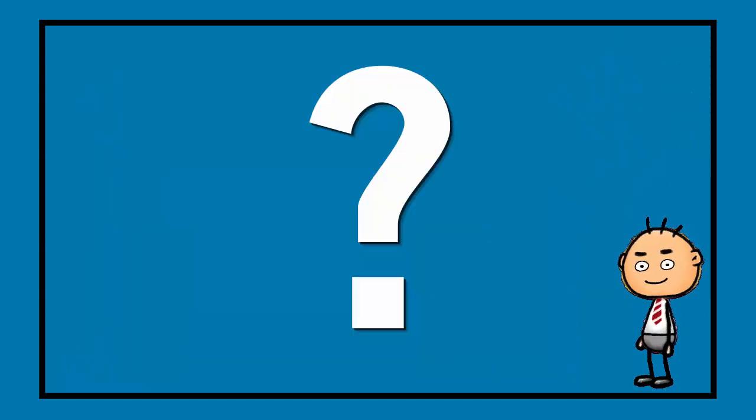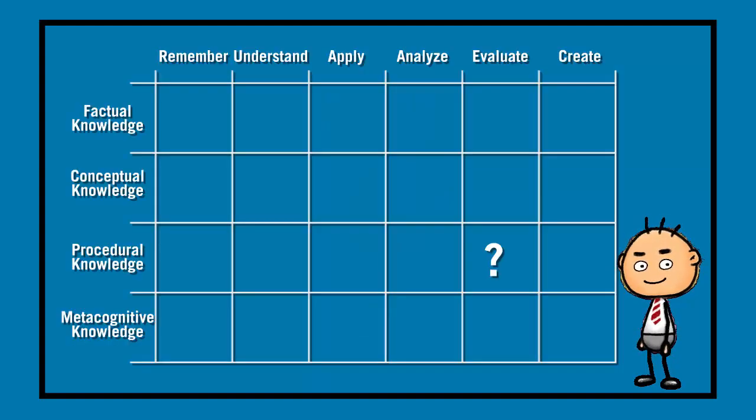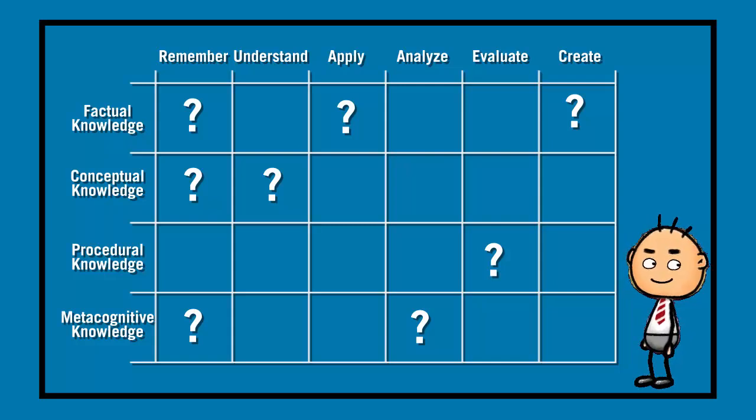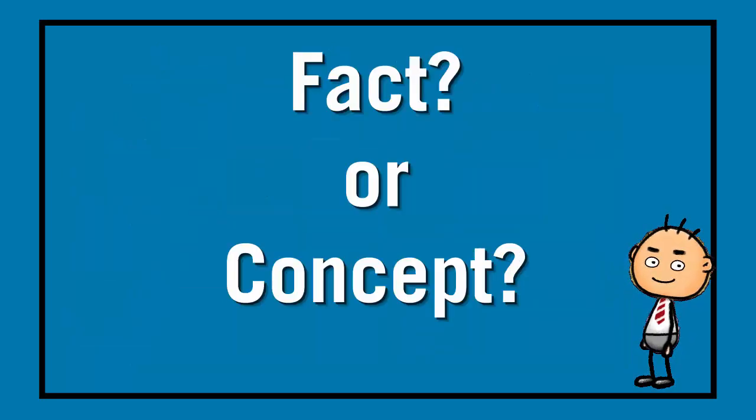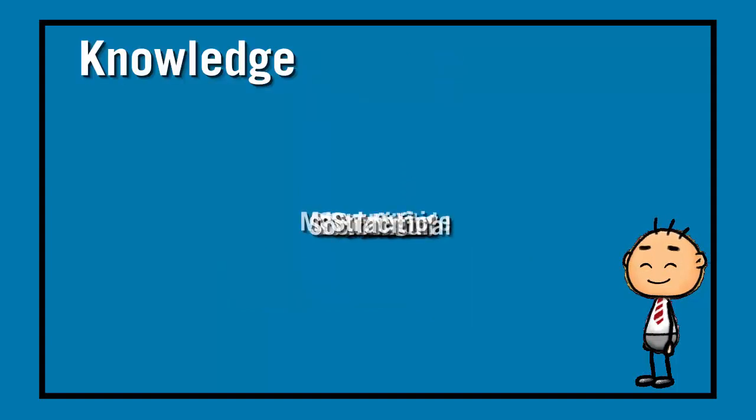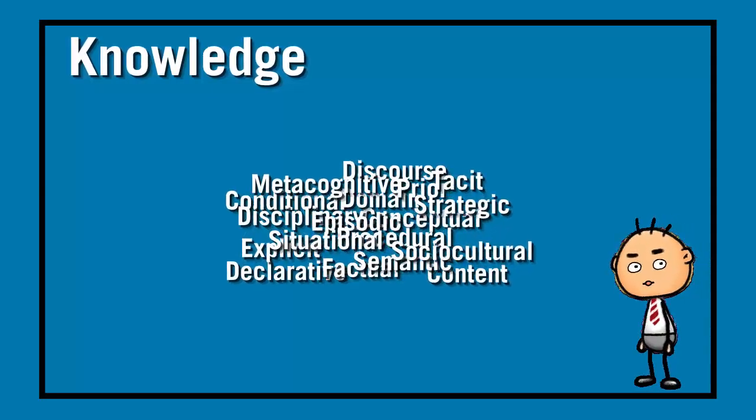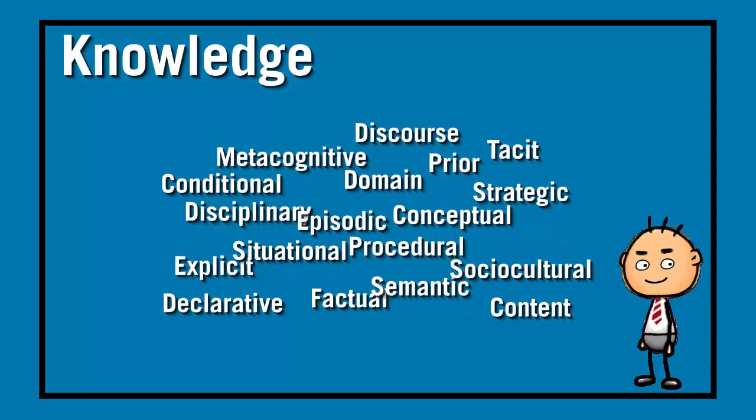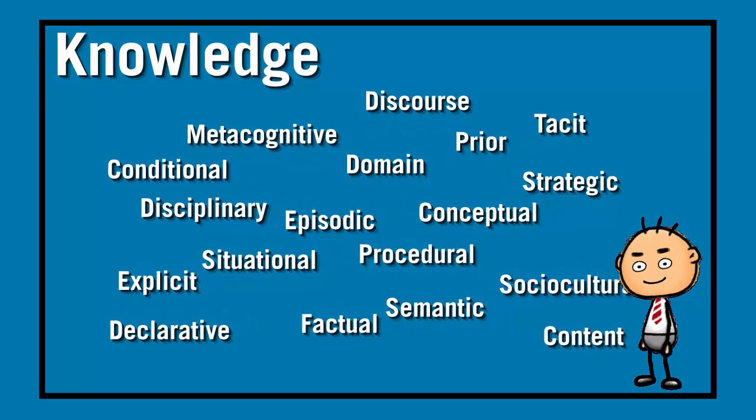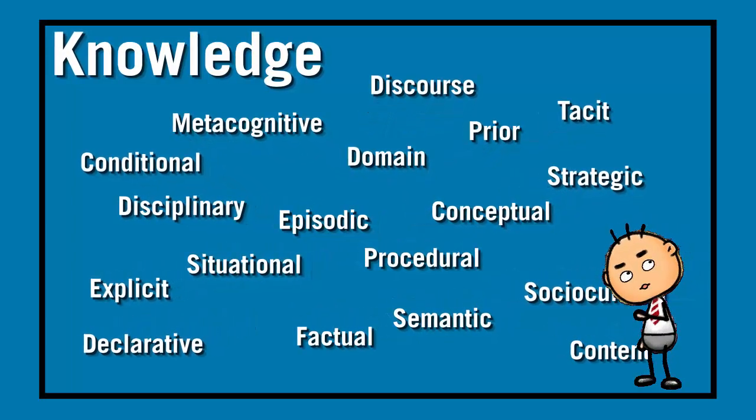Perhaps you've faced some challenges when you were trying to place your objectives in the taxonomy table. Perhaps you were confused as to where to put some of the objectives. You might have asked yourself if this particular goal is a fact or a concept. It's not uncommon to have some trouble in categorizing knowledge. There is a multitude of terms that people use to describe knowledge. With the taxonomy table, Anderson and others have settled on four types of knowledge.